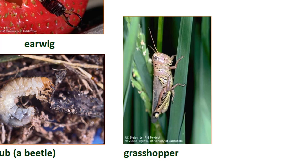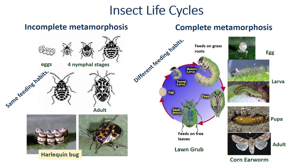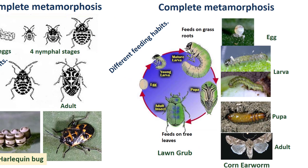Most arthropods hatch from eggs into immatures that increase in size by molting or shedding their outer body covering and growing a new, larger one. Often they modify their shape with each successive molt, a process known as metamorphosis. The period between one molt and the next is known as an instar. Some species undergo major morphological changes within a non-feeding pupal stage — these insects are said to have complete metamorphosis. Immatures in these groups are called larvae and often have different feeding habits from adults, so that only either the larval or adult stage causes damage. Examples include flies, wasps, moths, butterflies, and beetles.